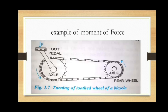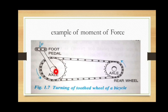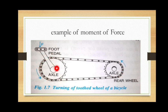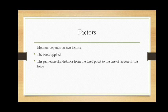The next example is the turning of the tooth wheel of a bicycle. It moves about a fixed point — the axle — which is fixed with the foot pedal. About this point, the chain wheel of the bicycle can turn and move. This point is called the fixed point about which it rotates. This is also an example of the moment of force.